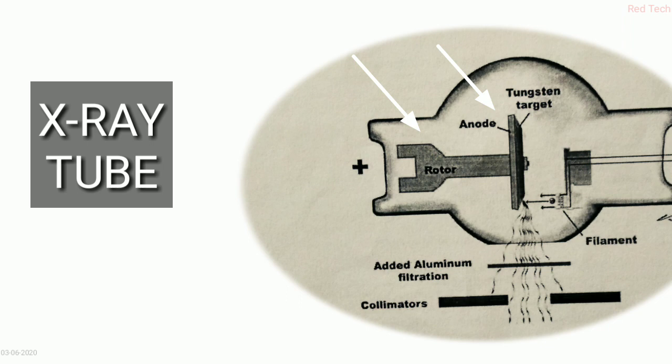Phir aata hai hamara jo target hai. Jo hamara anode hai woh hamara tungsten ka bana hota hai aur is mein jo ek tarah se jo stationary anode hai, woh hamara tungsten ka hai aur woh copper block mein hota hai.